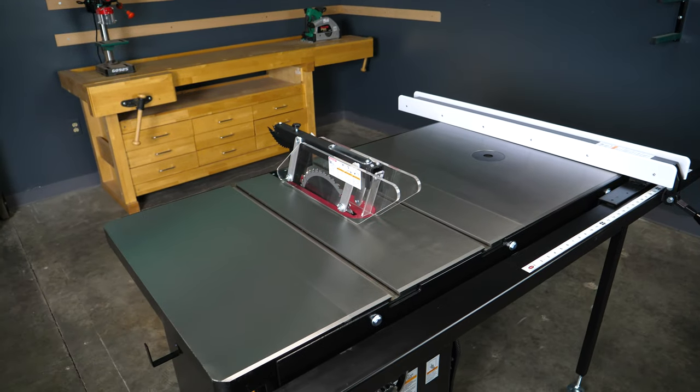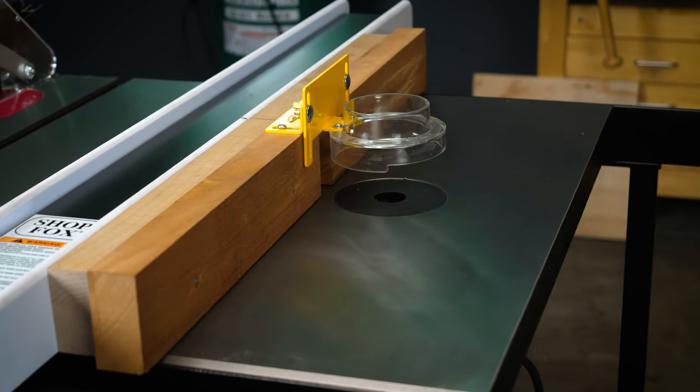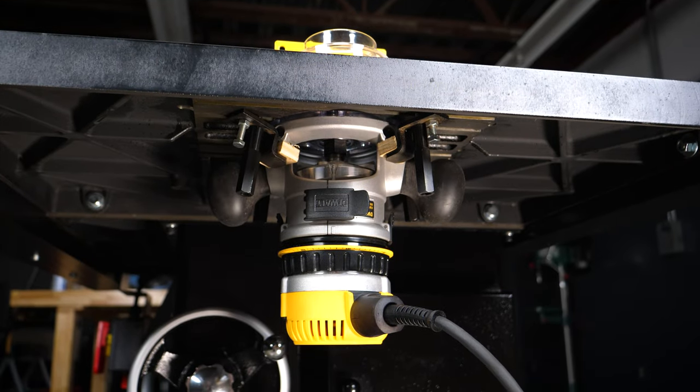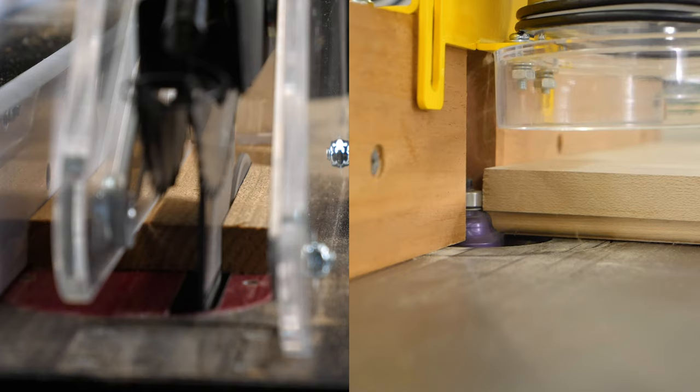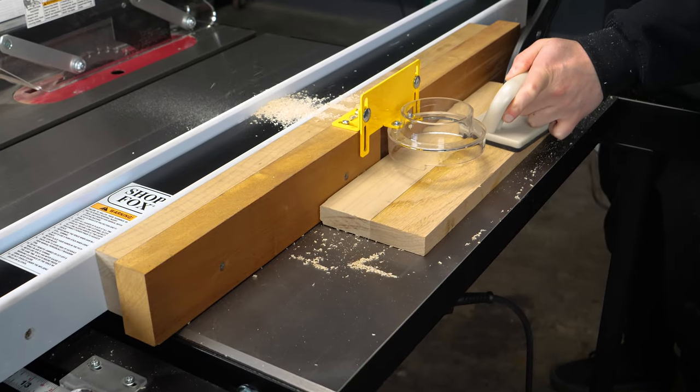This limited-edition cabinet table saw features a built-in router table that fits most routers so you can rip a board and route an edge all on the same machine, saving you valuable time and shop space.